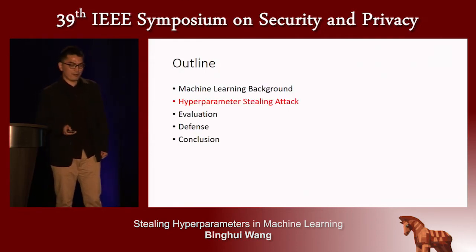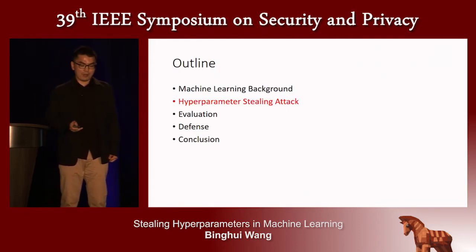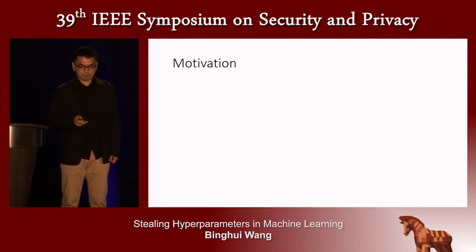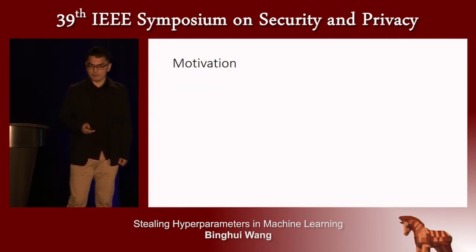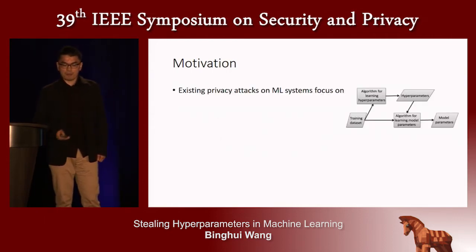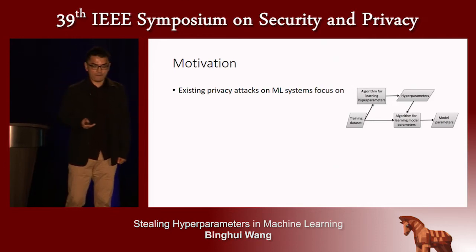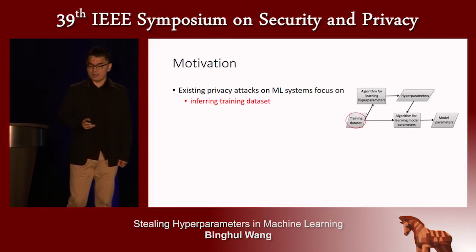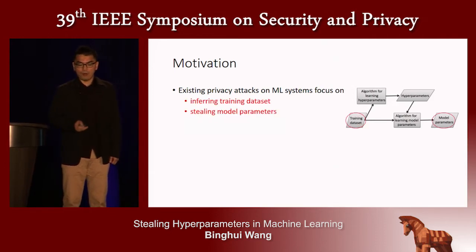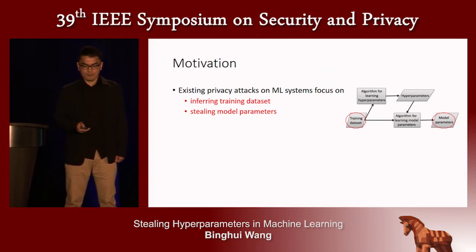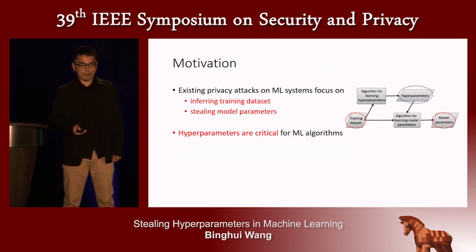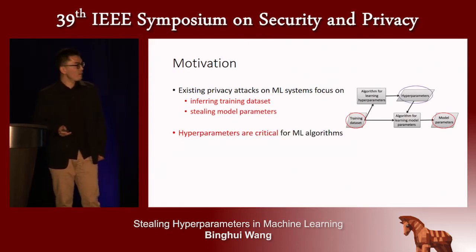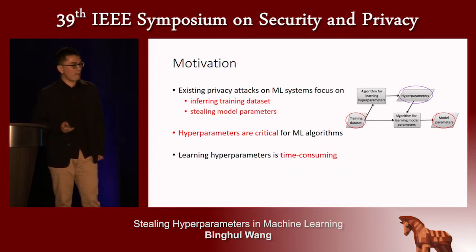Now I will present our hyperparameter stealing attack. The motivation: existing privacy attacks on machine learning systems focus on either inferring the training dataset or stealing the model parameters. However, hyperparameters are also critical for machine learning algorithms, and learning hyperparameters is time-consuming.